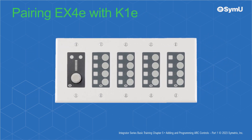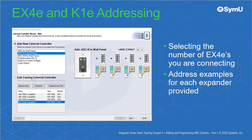First, we'll look at the EX4E coupled with a K1E. Configuring the combination of an ARC K1E and up to four ARC EX4Es begins by selecting the number of EX4Es that are currently connected to your K1E on the initial page via the drop-down list. An address example of each expander is provided as well.